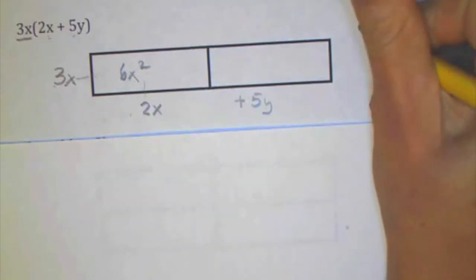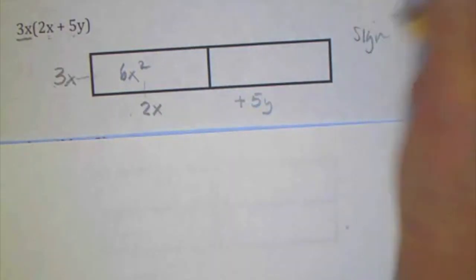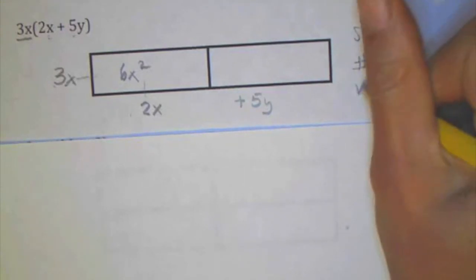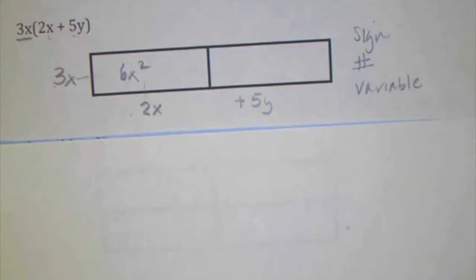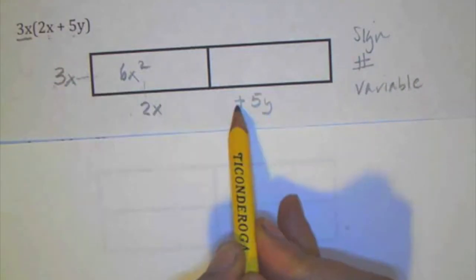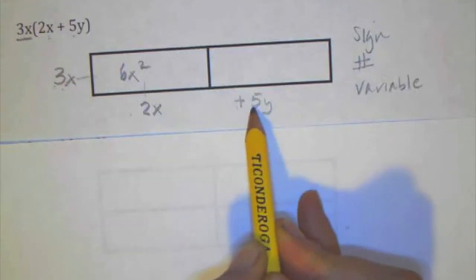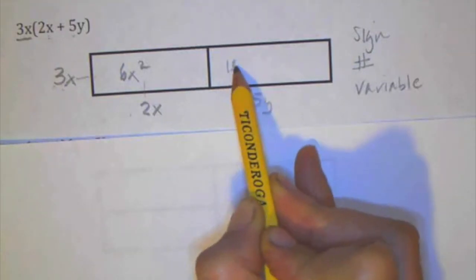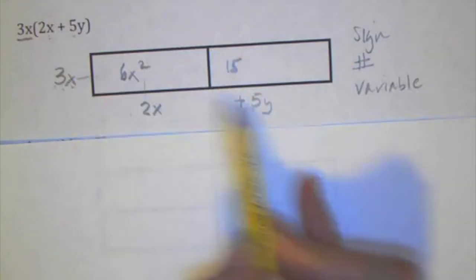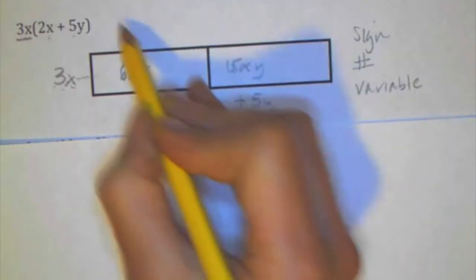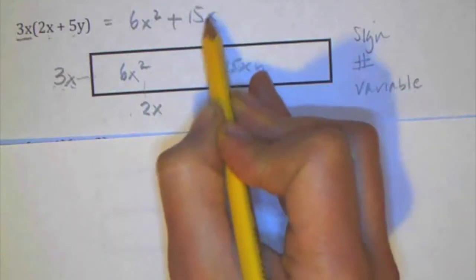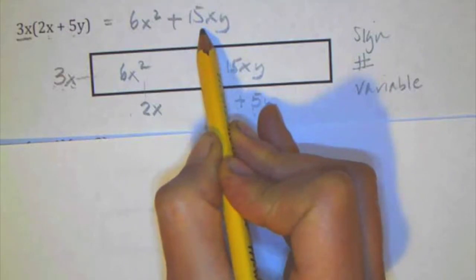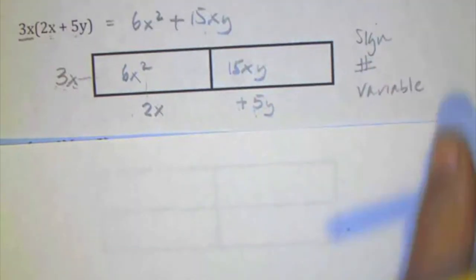The way that I like to think about it is I deal with the sign first, then the number, then the variable, so that way I make sure that I don't miss anything. So here it's positive times a positive, 3 times 5 is 15, and then variable x times y is xy. And then I add my terms together, 6x squared plus 15xy. I look to see if there's any combining that can be done. There isn't, so that's my final answer.